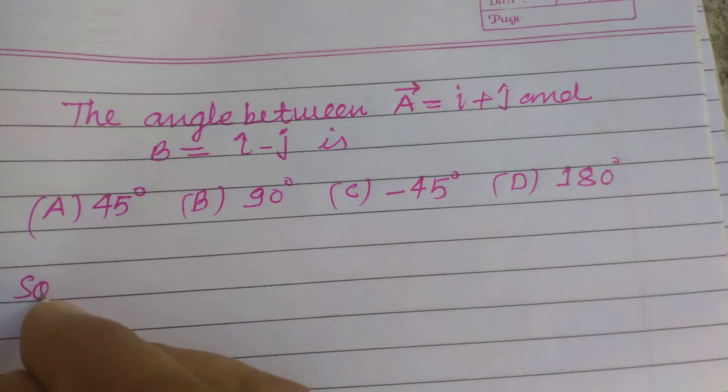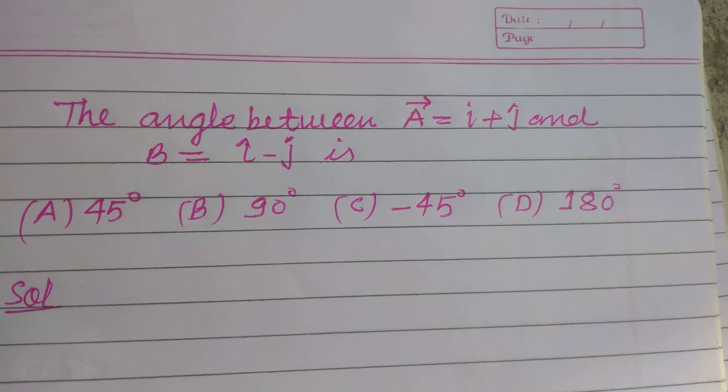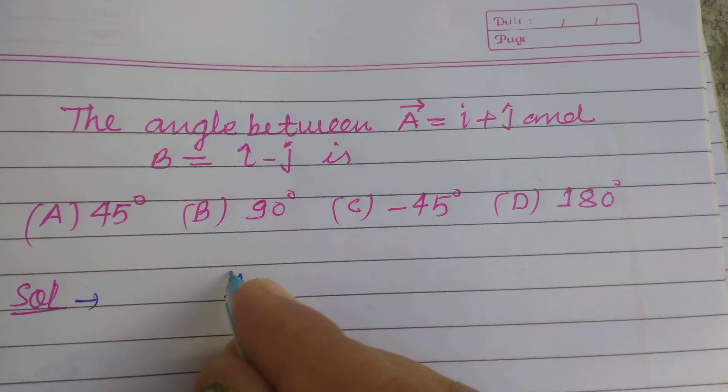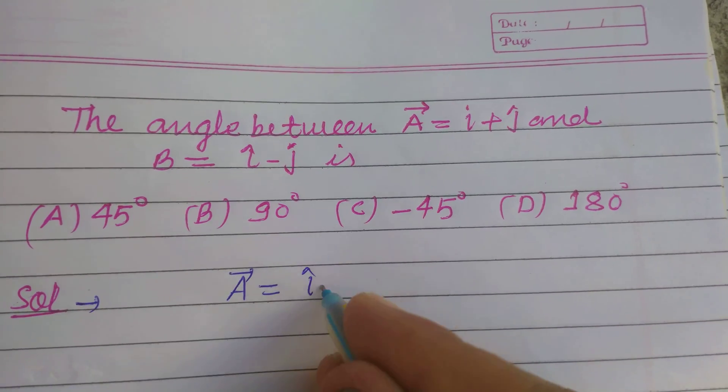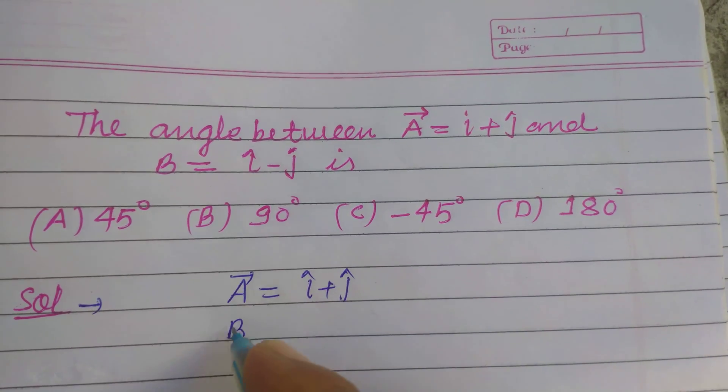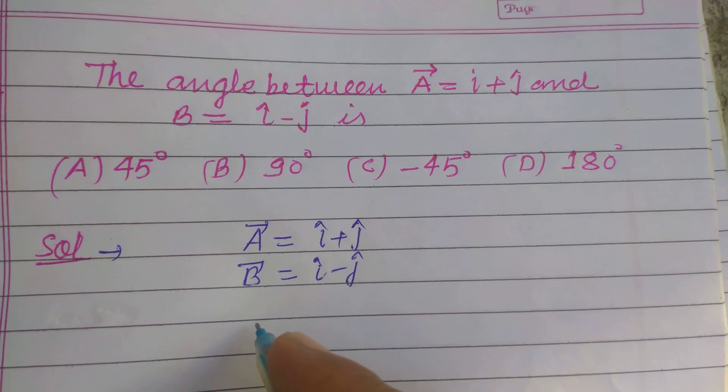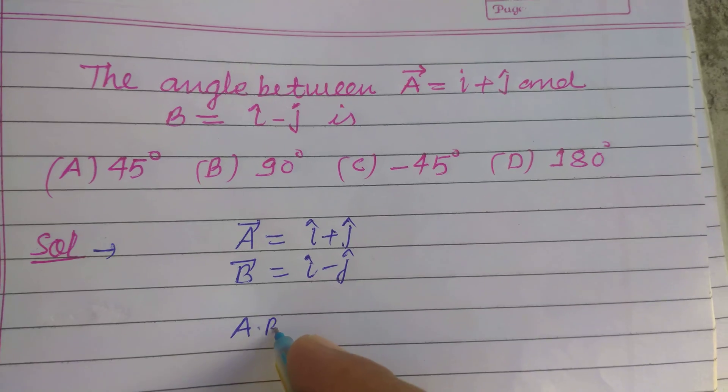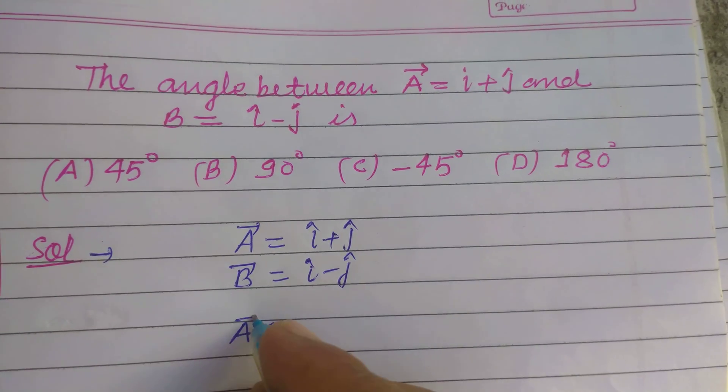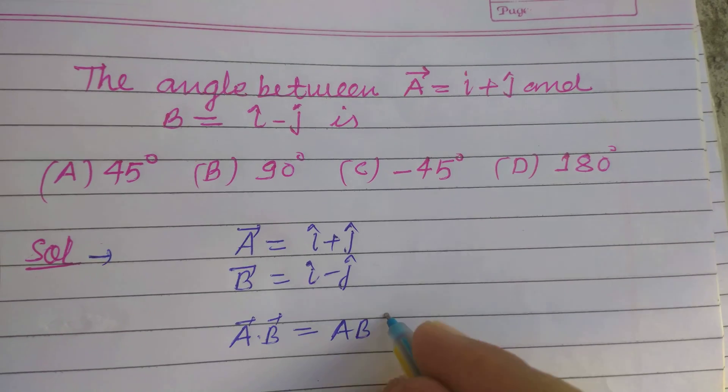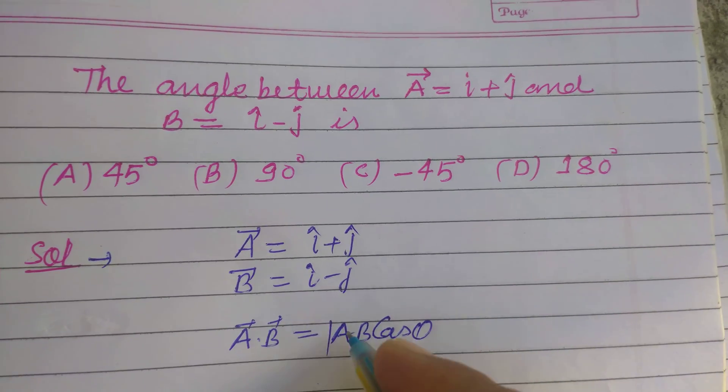So students, getting the angle for these two vectors, we take vector A equal to i cap plus j cap and vector B is i cap minus j cap. So you know that A dot B equal to magnitude of A, magnitude of B, cosine theta.